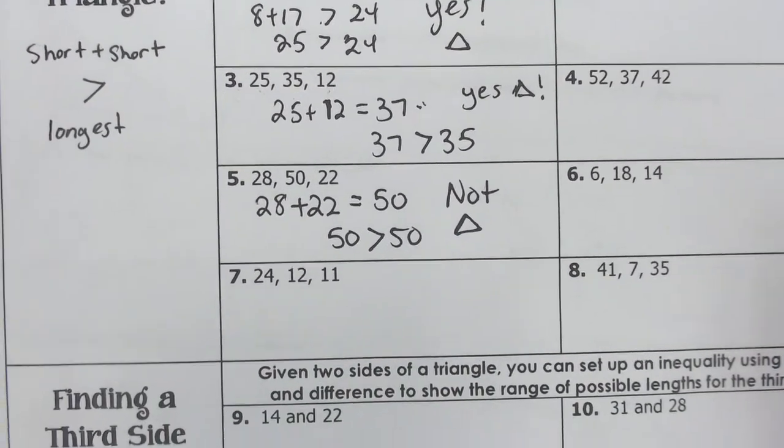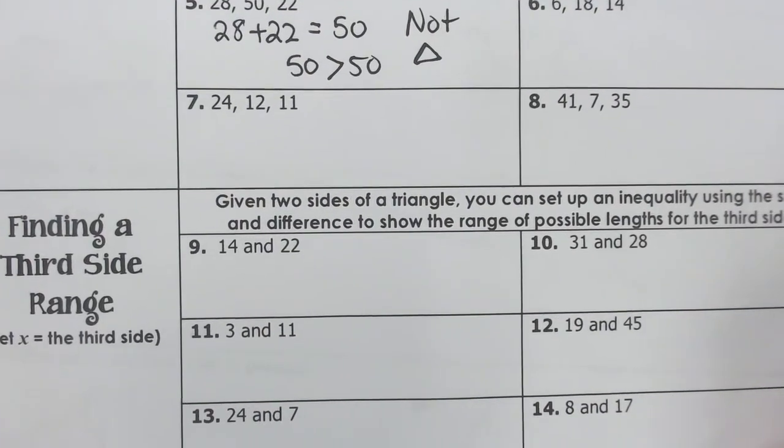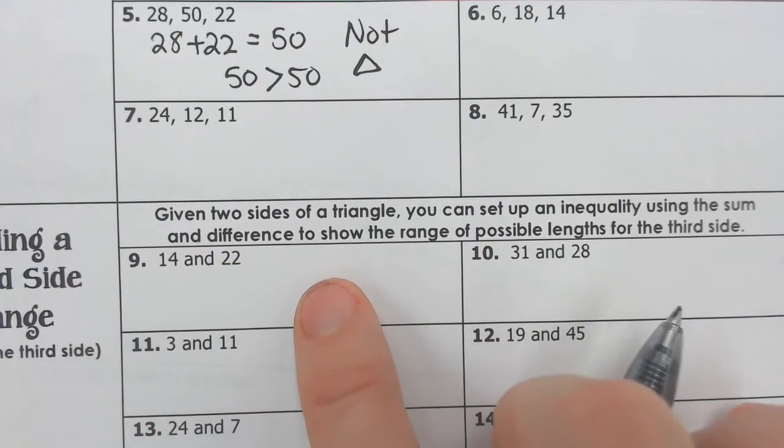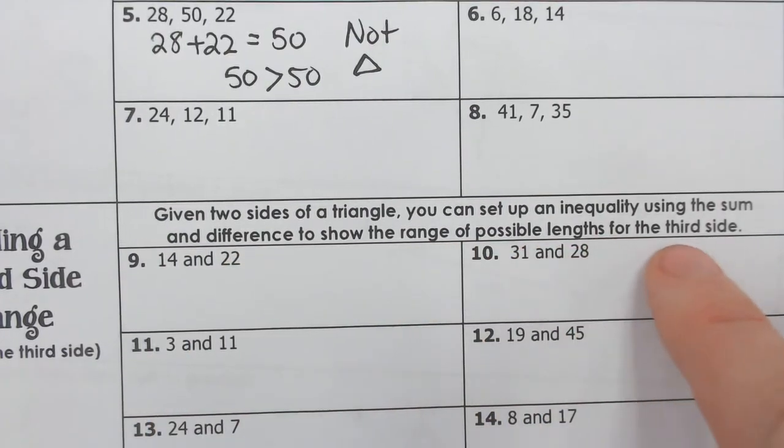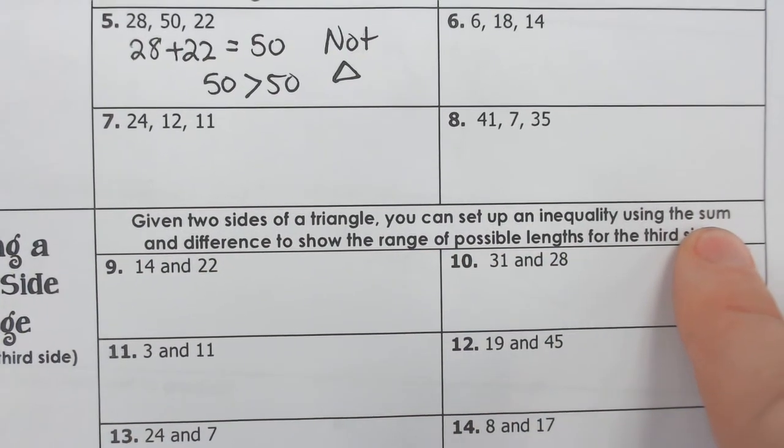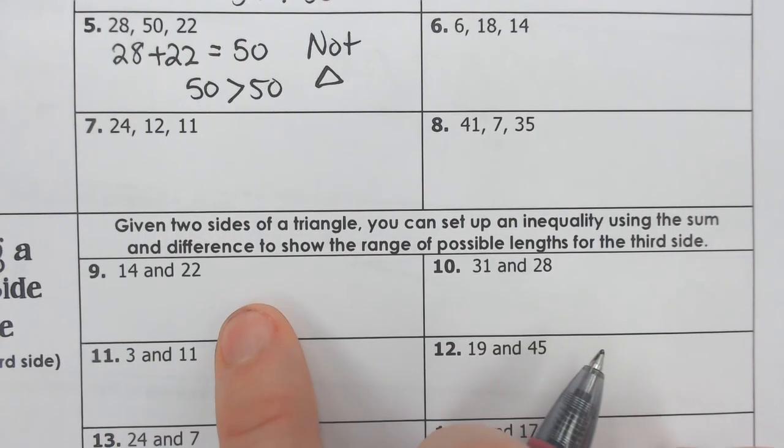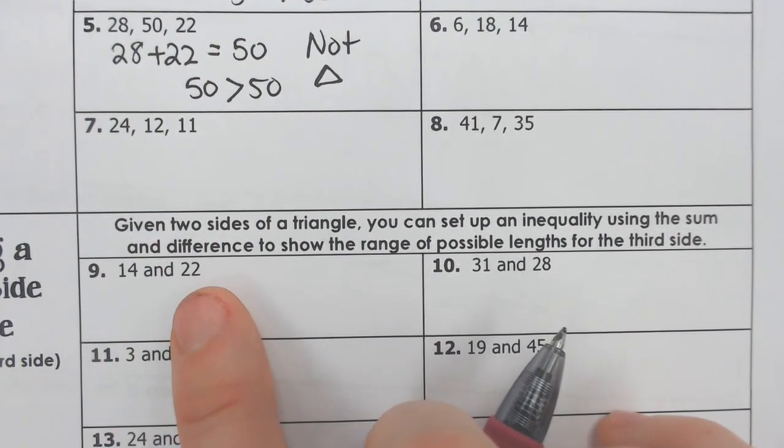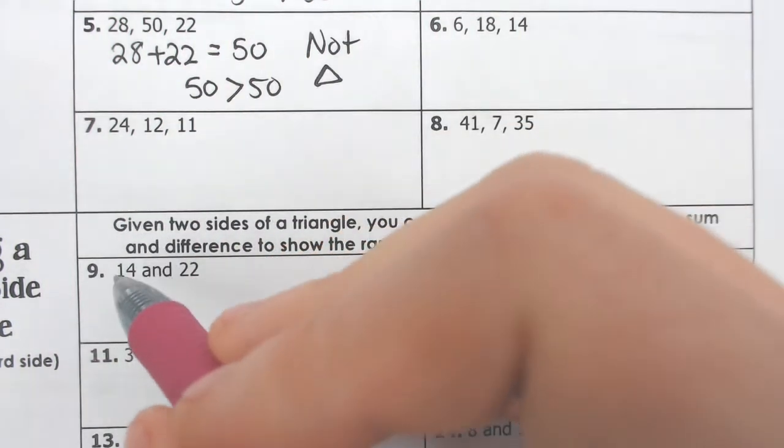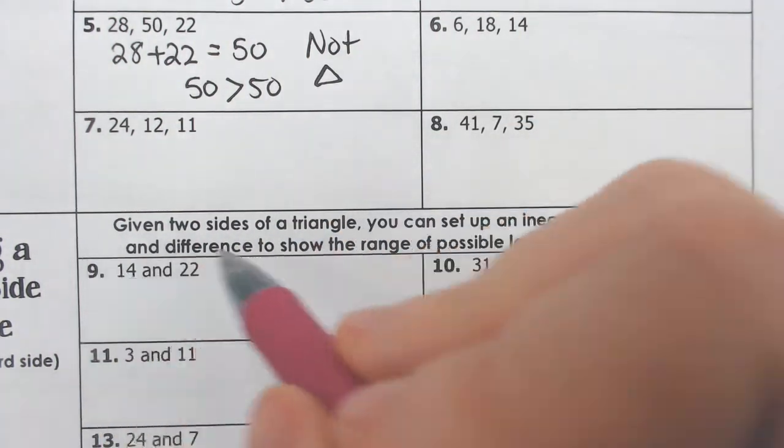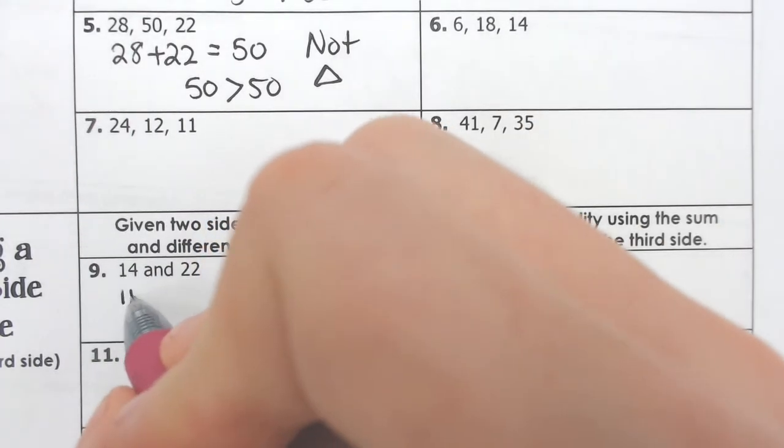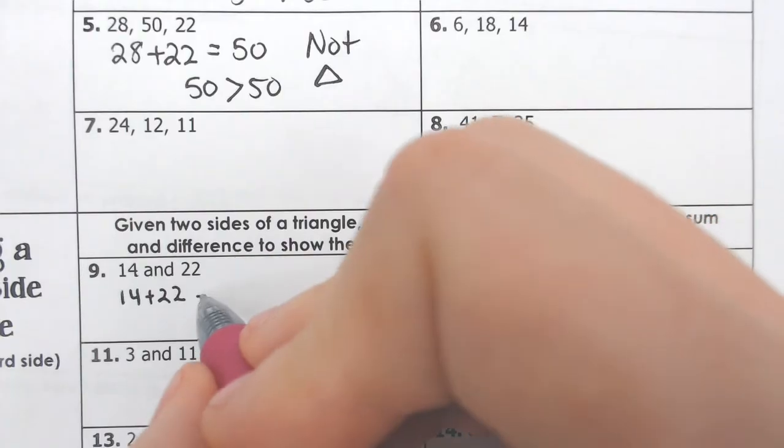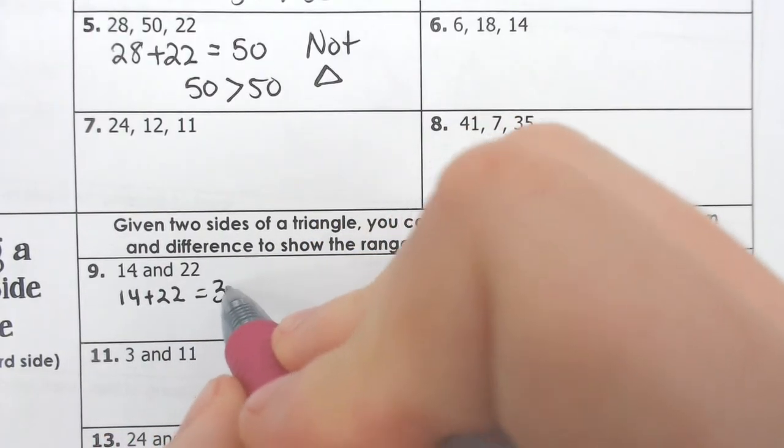Another way these problems can be presented is given two sides of the triangle, you can set up an inequality using the sum and differences to show the range of possible values. So it says using the sum and differences, meaning we can subtract these guys and add these guys together. So let's say if we were missing the biggest side, the longest side, we would know that if we were to add these two short sides, supposing they're the short sides, we would get 14 and 22 makes 36.